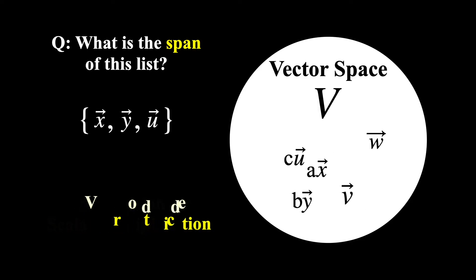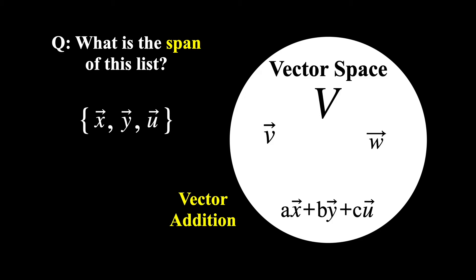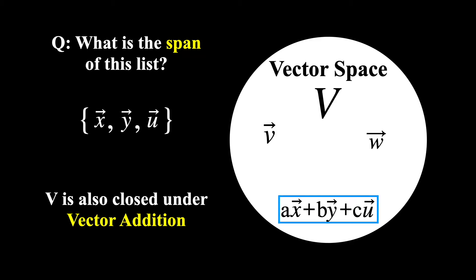Thus, we can now perform the operation of vector addition and add these new vectors together. But a vector space is also closed under vector addition. So again, we end up with another vector that lives in this vector space.